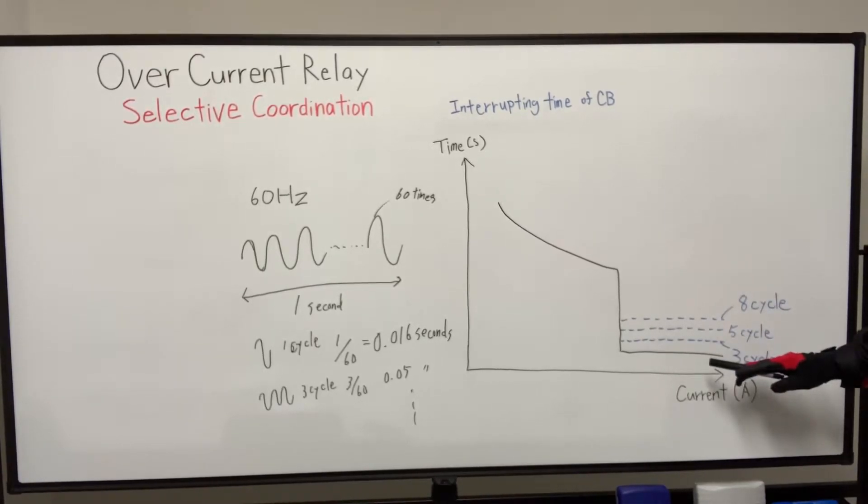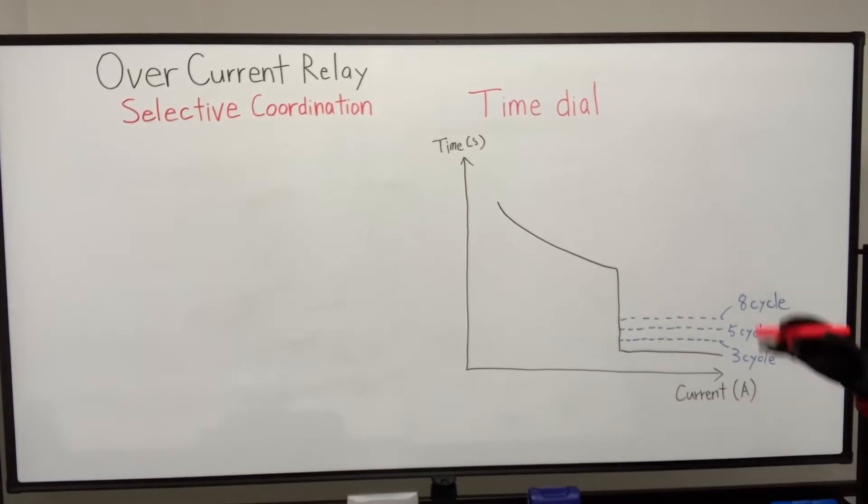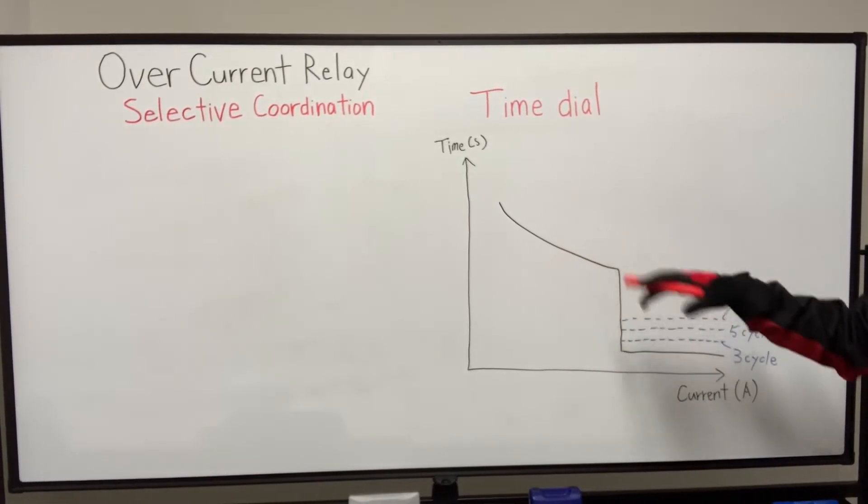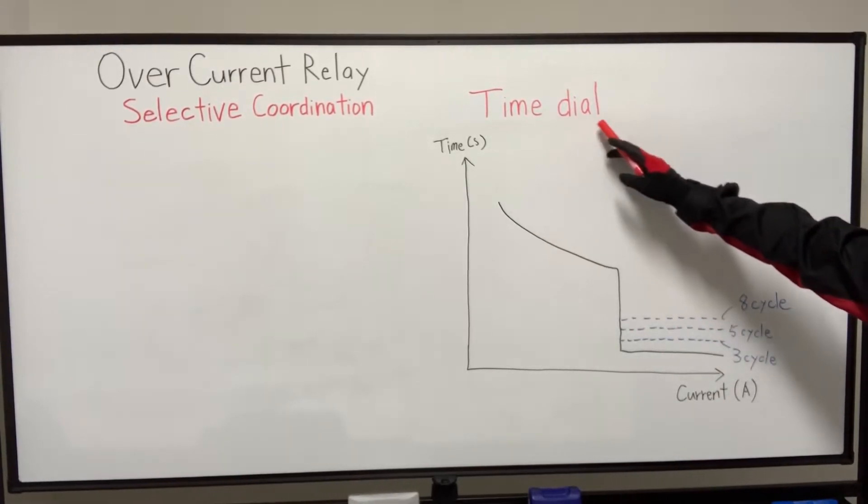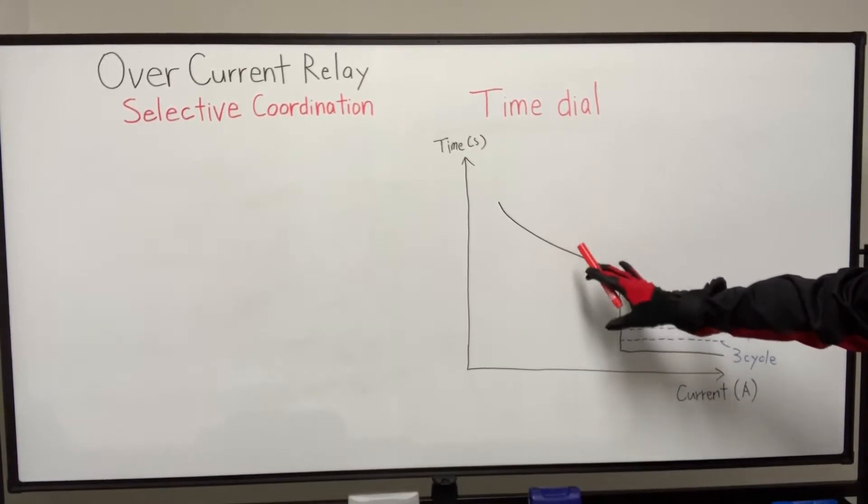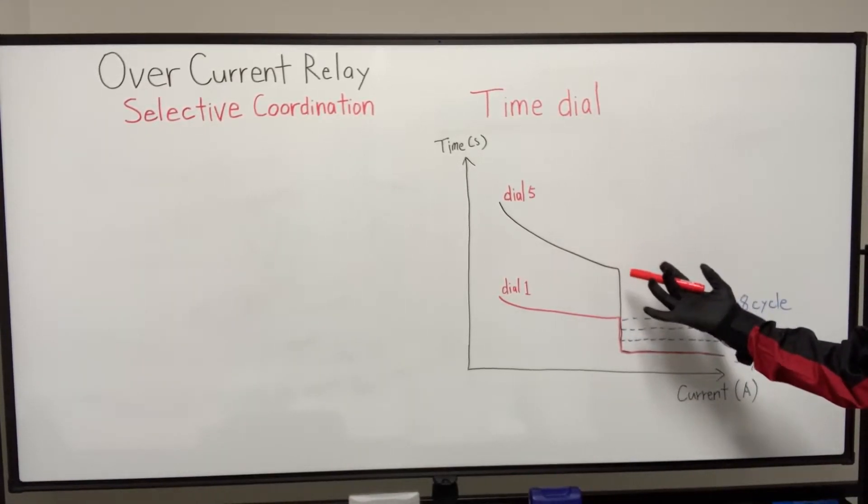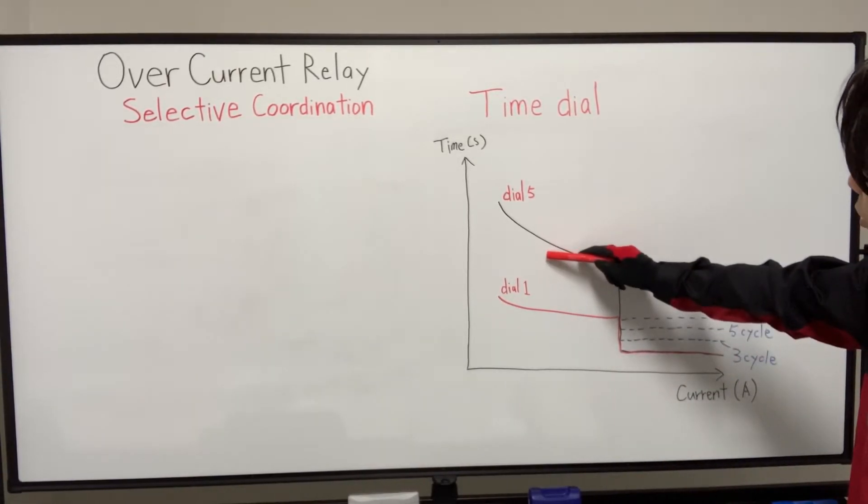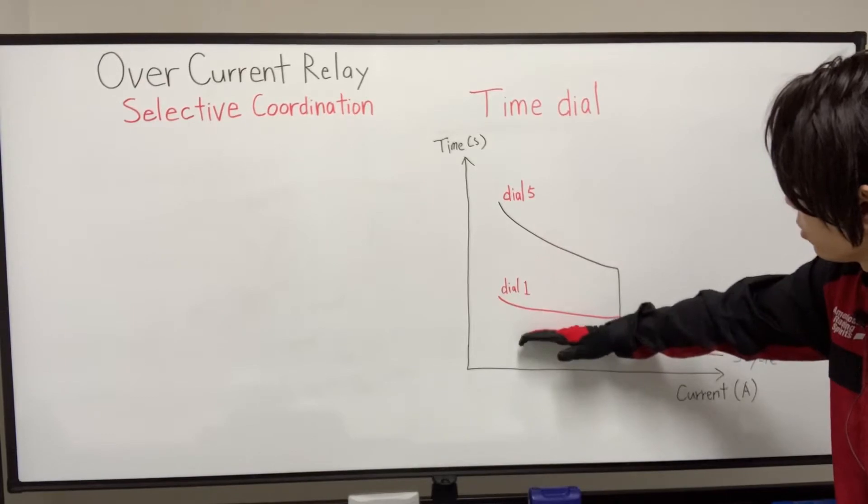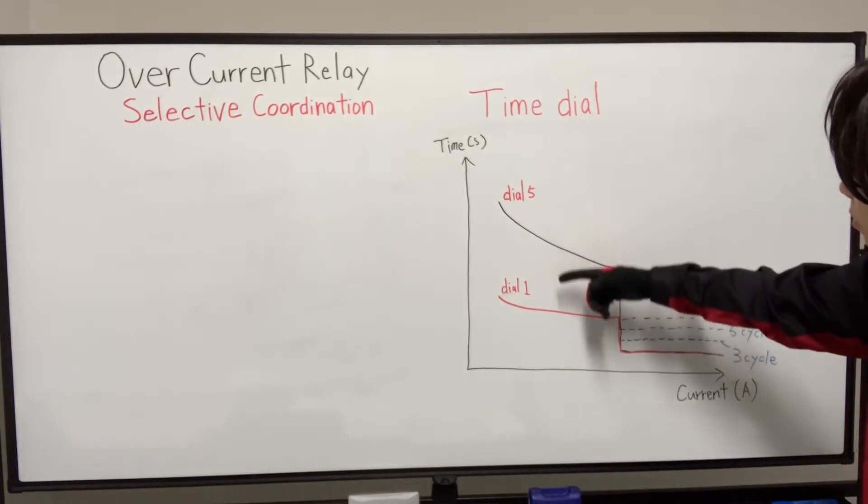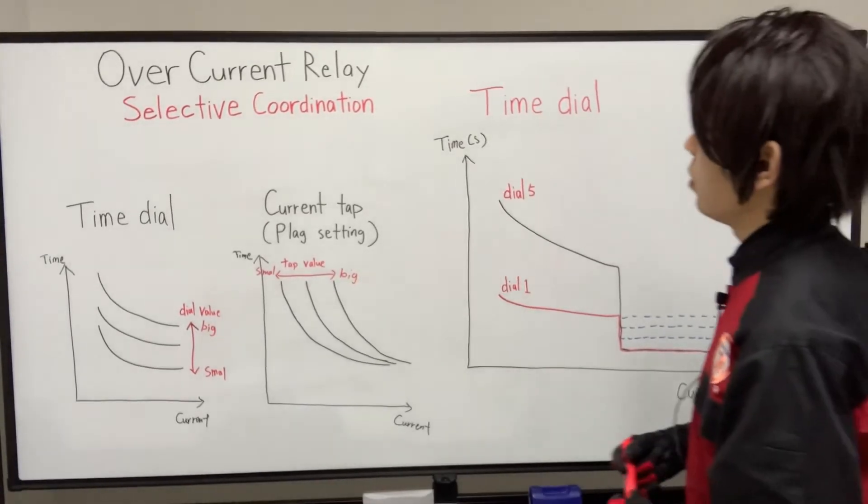I think shorter interrupting time is more high spec and maybe more high cost. Also, we can arrange the time characteristics of overcurrent relay by adjusting the function which is called time dial. We can change the shape of this curve by changing time dial, something like that. Thanks to time dial, we can adjust the inverse time characteristics from here to here. For example, dial 5 is here, dial 1 is kind of this.